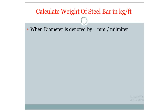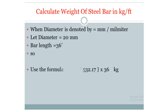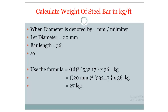Now showing a practical example: when the bar diameter equals 20 mm and the length equals 36 feet, the weight of the steel bar is 27 kg. This uses the formula D squared divided by 532.17 multiplied by the length of the rod to find the total weight.